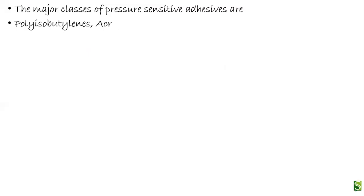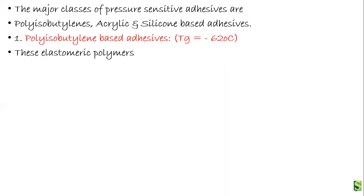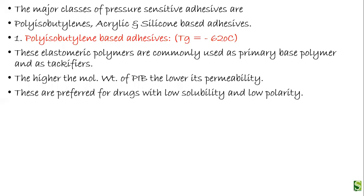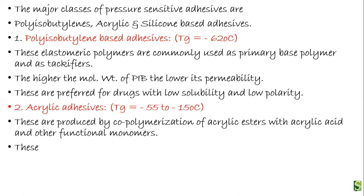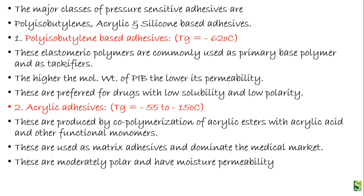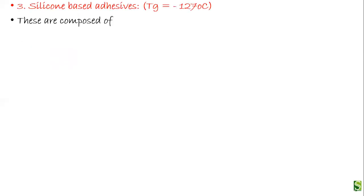The major classes of pressure sensitive adhesives are polyisobutylene, acrylic, and silicone-based adhesives. Polyisobutylene-based adhesives are elastomeric, used as tackifiers, and the higher the molecular weight, the lower the permeability — making them suitable for drugs with low solubility and low polarity. Acrylic adhesives are produced by co-polymerization of acrylic esters with acrylic acid and other functional monomers; these are used as matrix adhesives, dominate the medical market, and are polar with moisture permeability.